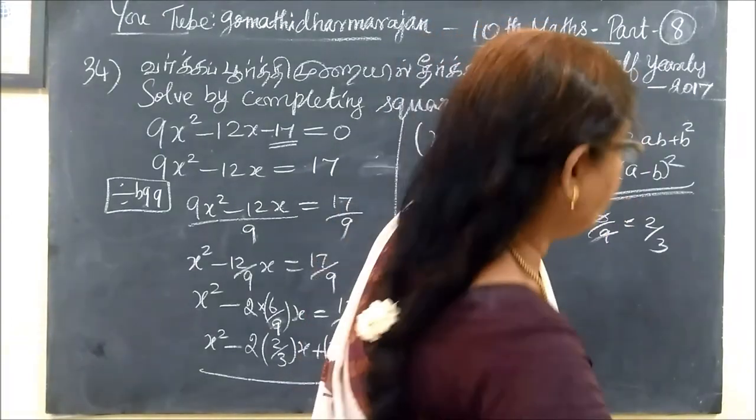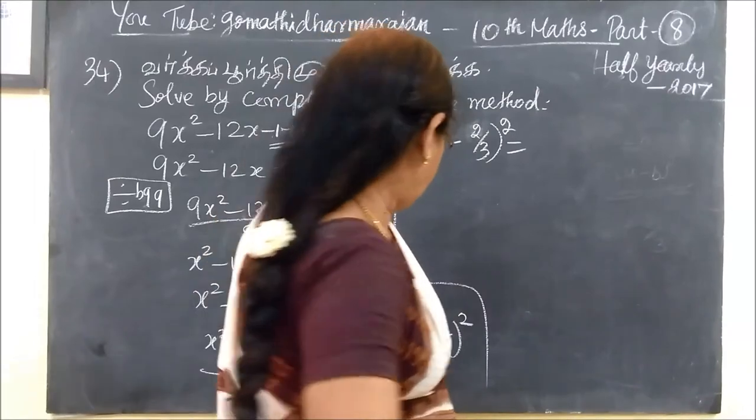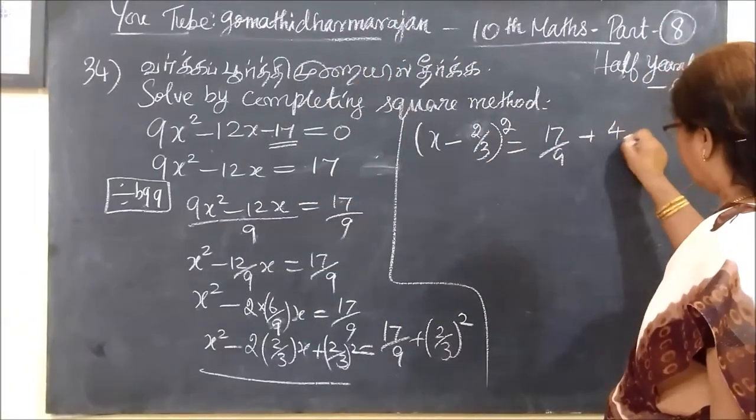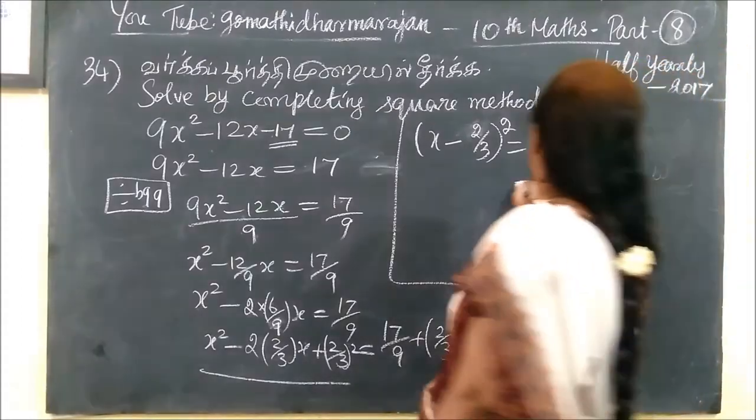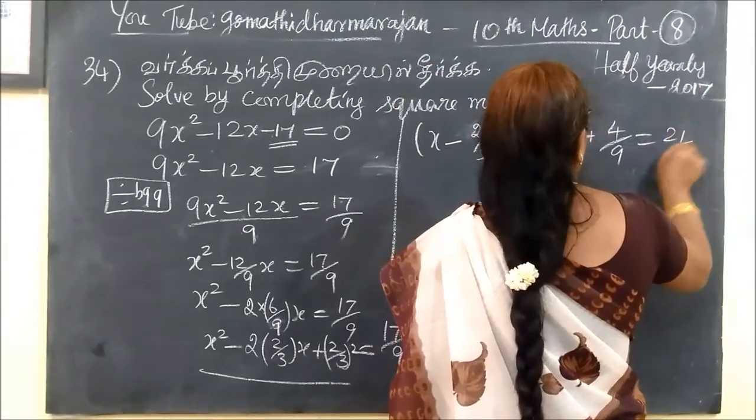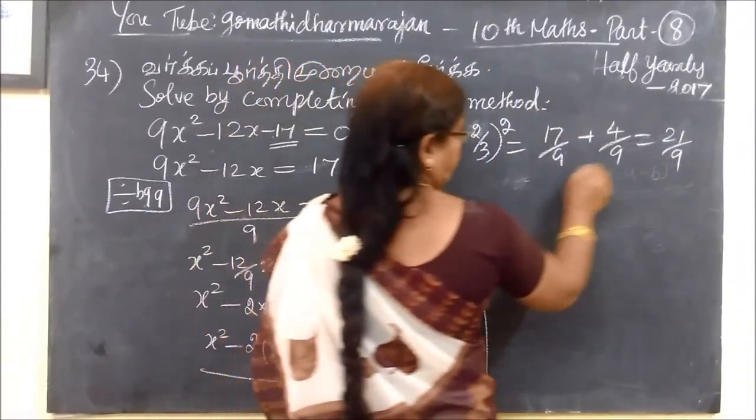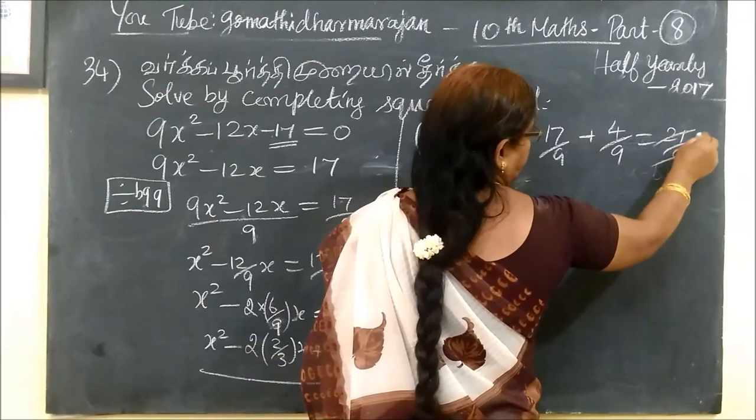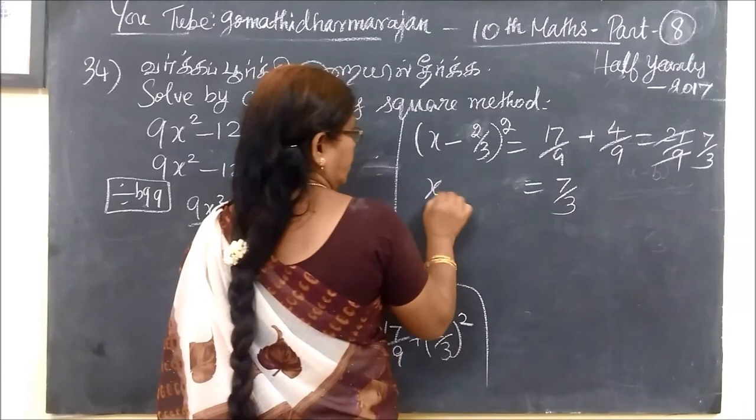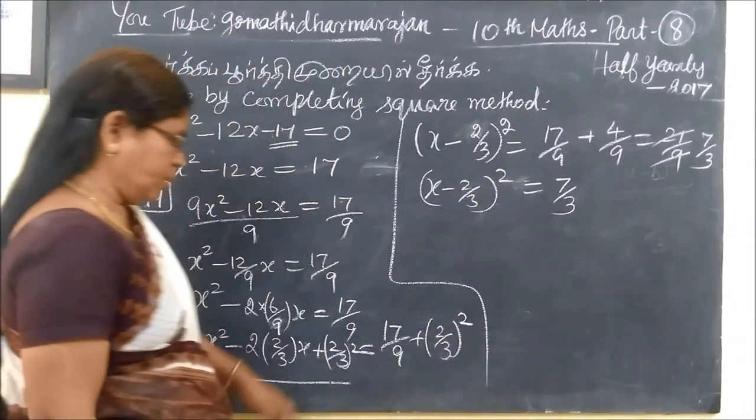17 by 9. So, this is 17 by 9 plus 4 by 9. So, that is equal to 21 by 9. So, if you cancel, we are getting 7 by 3. So, this is equal to 7 by 3. This is (x - 2/3)² equal to 7 by 3.